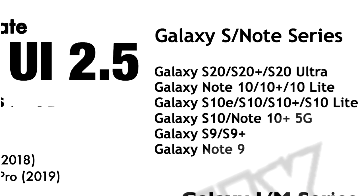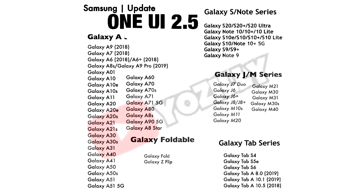The S20, S20+, and S20 Ultra are included, along with the complete S10 series: S10, S10+, S10e, and S10 Lite. Moving on, we have the Note 10, Note 10+, and Note 10 Lite. The S9 family will also get the One UI 2.5 update, which includes the S9, S9+, and the Note 9. The list goes on, so you can pause the video to see if your smartphone is included.